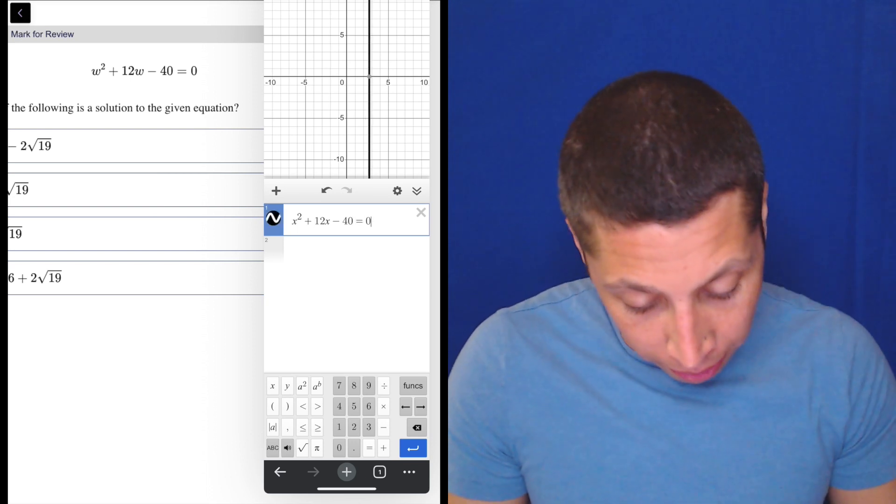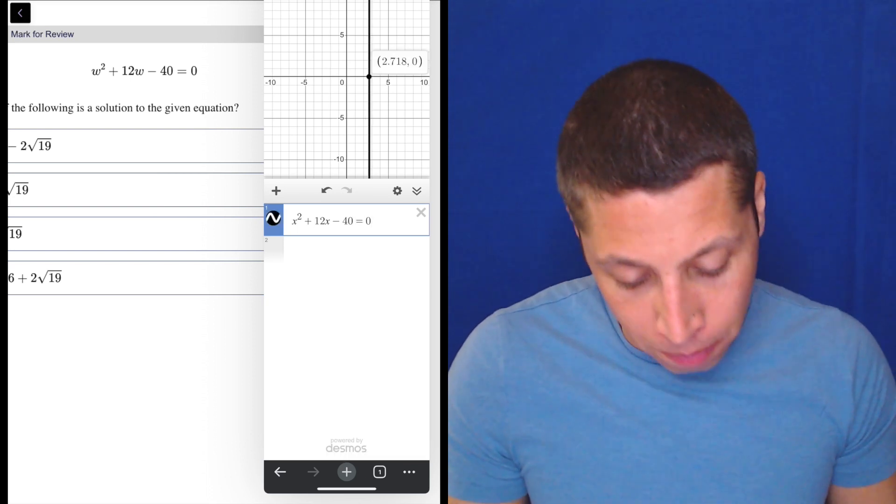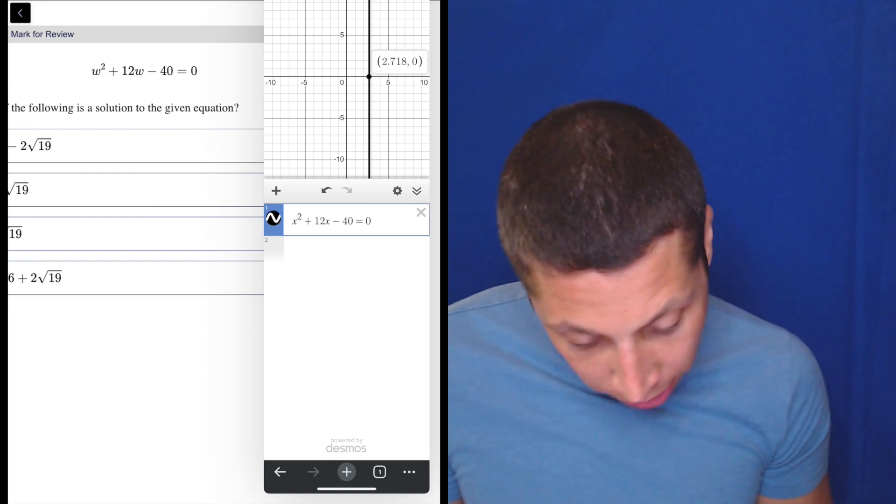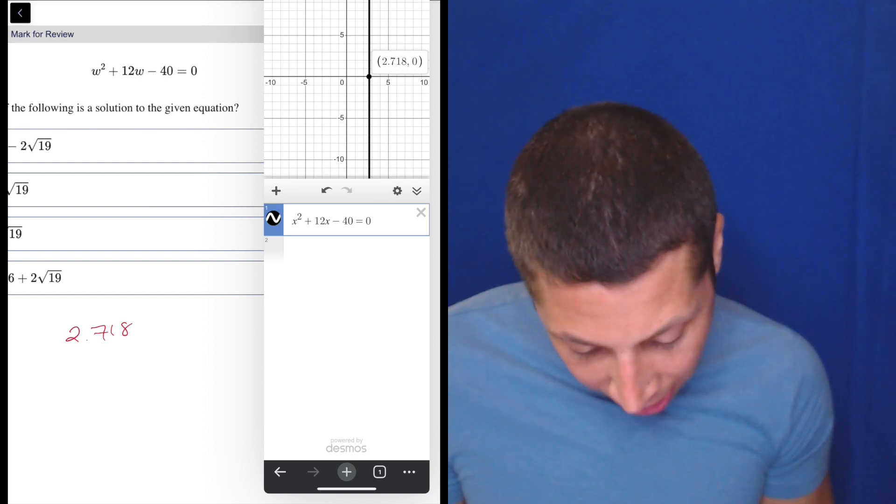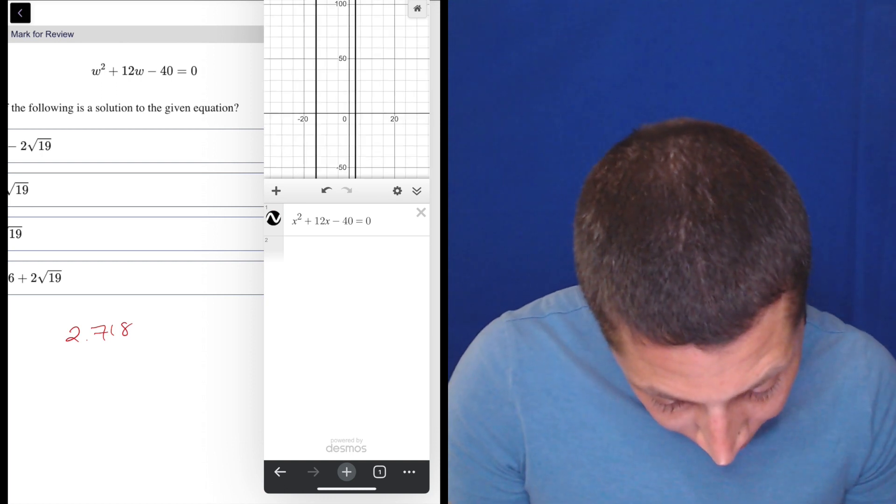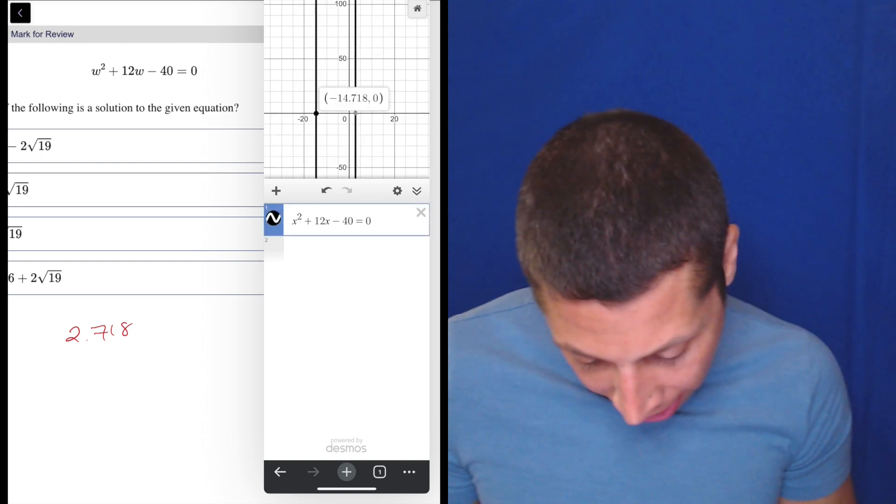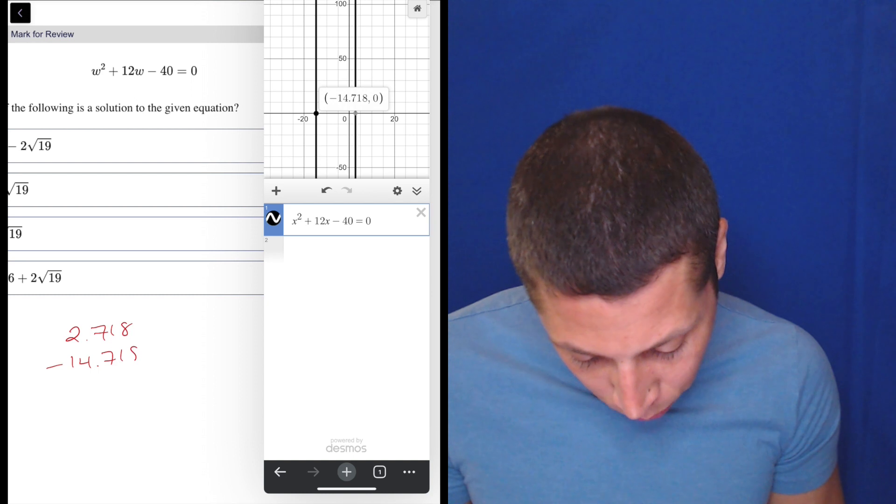And it should work fine that I get some messy numbers. So I'm gonna write them down. So one is 2.718. And I gotta zoom. There's gonna be another somewhere. There it is. It is negative 14.718.